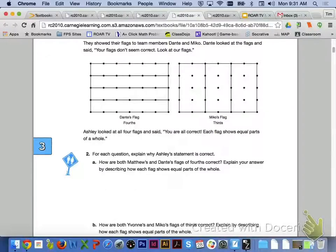Ashley looked at all four flags and said, you are all correct. Each flag shows equal parts of a whole. So, with understanding that, take a look at number two, and I would like you to answer letter A and letter B. Make sure that for each question, you are explaining why Ashley's statement is correct.